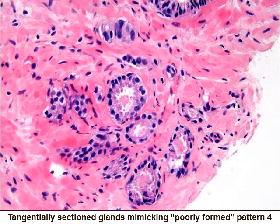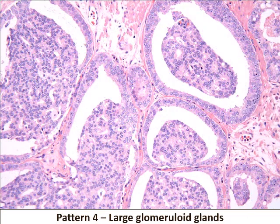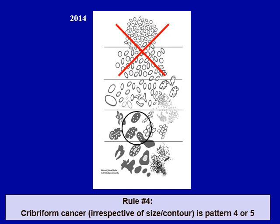This is especially critical when you are dealing with a small focus of prostate cancer. Here is a nice example of raggedly infiltrative fused glands, and here is a nice example of glomerulation, which results from intraluminal proliferation of cancerous cells. Both small and large glomerulations are considered Gleason pattern four. Rule number four, a major departure introduced in 2014, is that all cribriform cancer irrespective of its size and contour is graded as Gleason pattern four, or pattern five if associated with intraluminal necrosis.